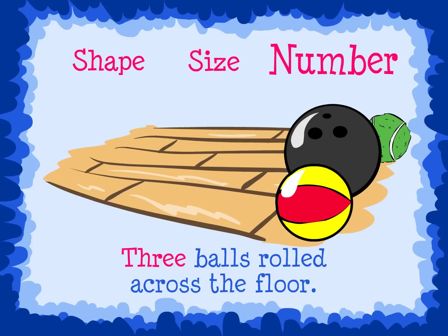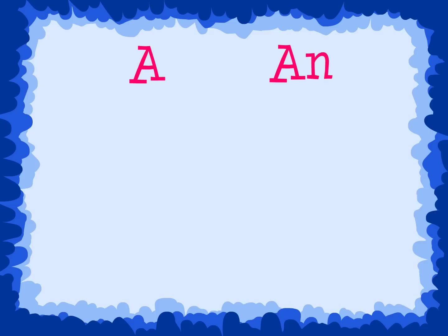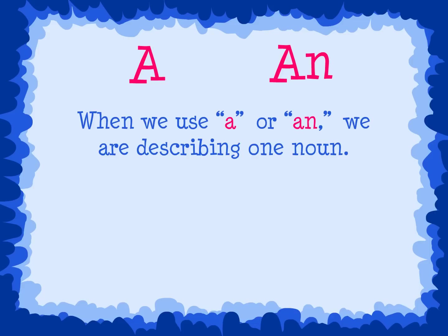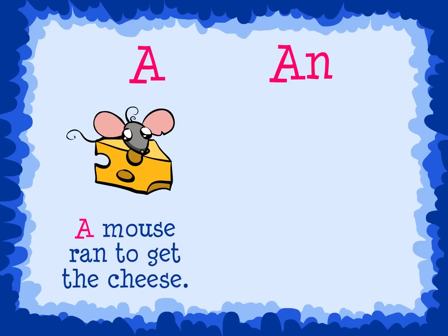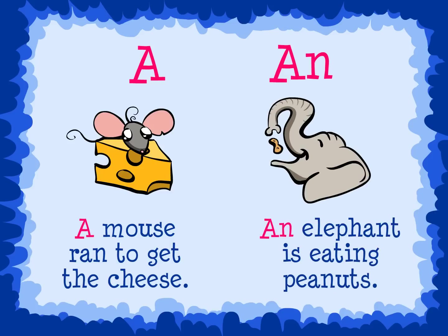Shape, size, and number are all adjectives that describe a noun. A and an are both adjectives because they describe the number of the noun. When we use a or an, we are describing one noun. For example, a mouse ran to get the cheese. An elephant is eating peanuts.